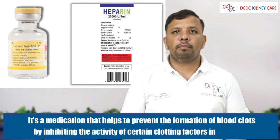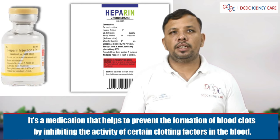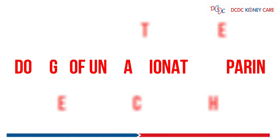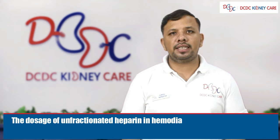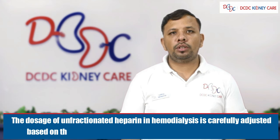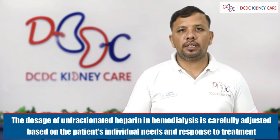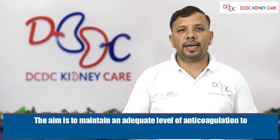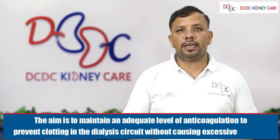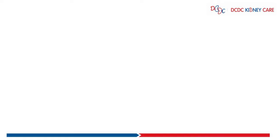Unfractionated heparin is commonly used as an anticoagulant agent in hemodialysis. It is a medicine that helps prevent formation of blood clots by inhibiting the activity of certain clotting factors in the blood. The dose of unfractionated heparin in hemodialysis is carefully adjusted based on the patient's individual needs and response to treatment. The aim is to maintain an adequate level of anticoagulation to prevent clotting in the dialysis circuit without causing excessive bleeding.